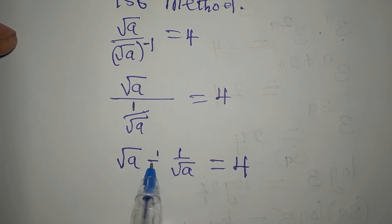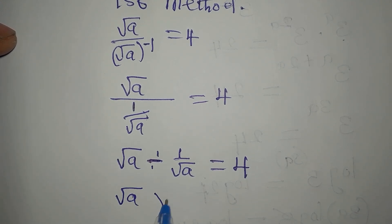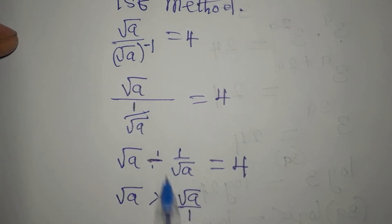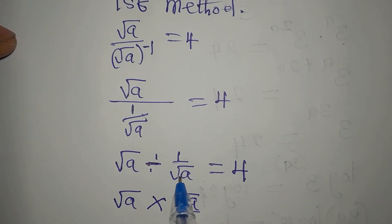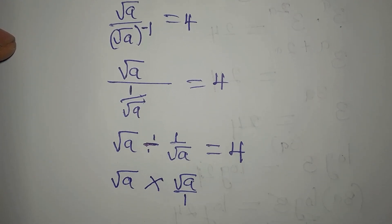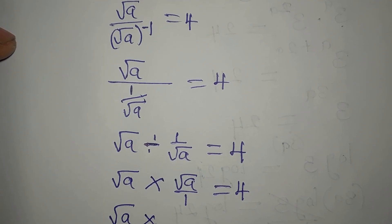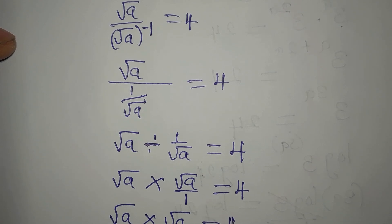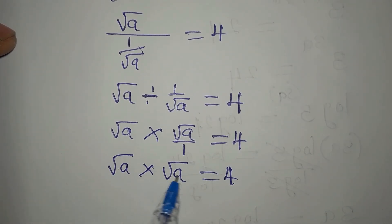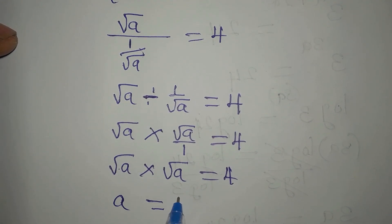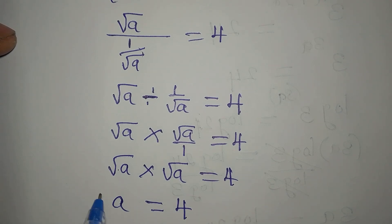Now I'm going to turn this division into multiplication. We have square root of a multiplied by square root of a over one — taking the inverse of the next term — and this is equal to four. So square root of a multiplied by square root of a is equal to four. Multiplying these two gives us a, so a is equal to four.